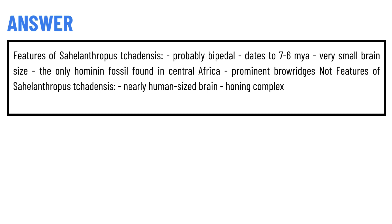Features of Sahelanthropus tchadensis: it probably dates to seven to six million years ago, has a very small brain size, is the only hominid fossil found in Central Africa, and has prominent brow ridges.